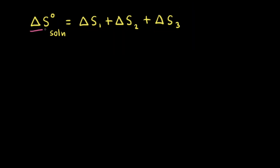Next, let's think about delta S-naught of solution. Delta S-naught of solution is equal to delta S-1 plus delta S-2 plus delta S-3. Delta S-1 was positive, delta S-2 was also positive, but delta S-3 was negative. Therefore, just like we saw for delta H-naught, the sign for delta S-naught depends on the magnitude of delta S-1 plus delta S-2 compared to delta S-3. If delta S-1 plus delta S-2 is greater in magnitude than delta S-3, delta S-naught of solution will be positive. However, if the magnitude of delta S-3 is greater, delta S-naught of solution will be negative.